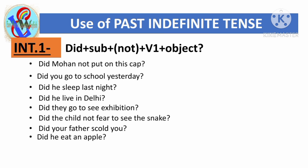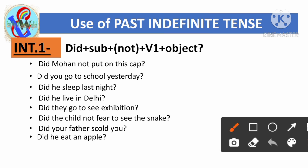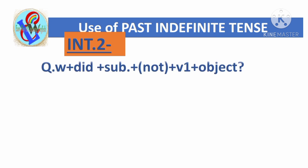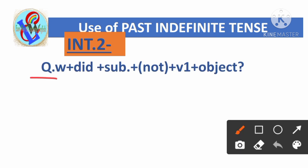'Did he eat an apple?' Here 'did' is used first, then the subject 'he', then 'eat' which is the first form of the main verb, and 'an apple' is the object. The interrogative type 2 structure is: Question word + did + Subject + (not) + first form of verb + object.